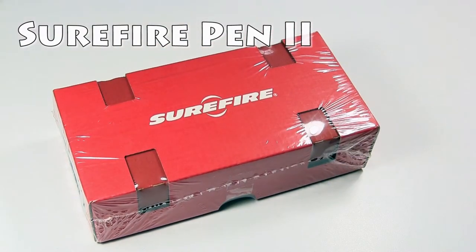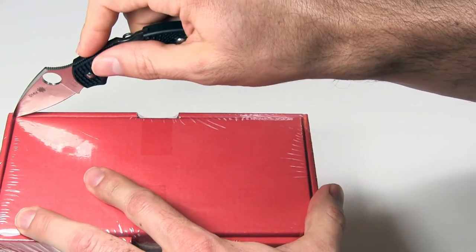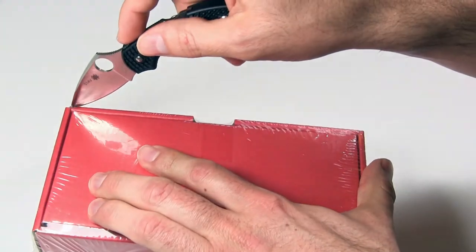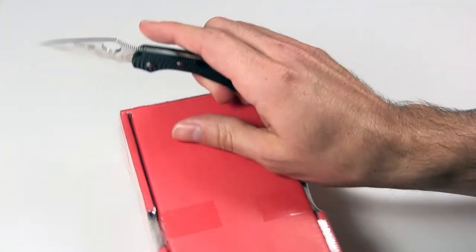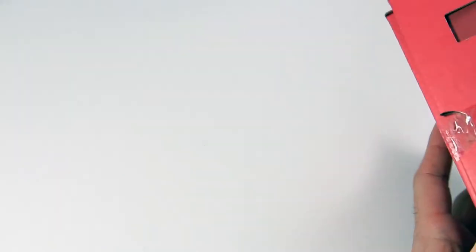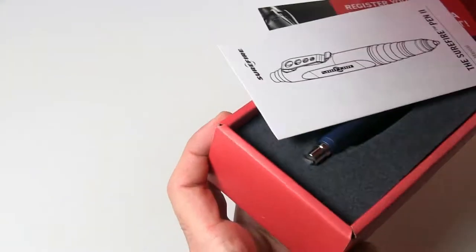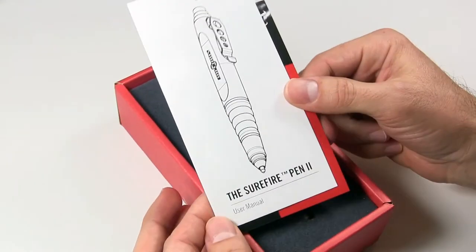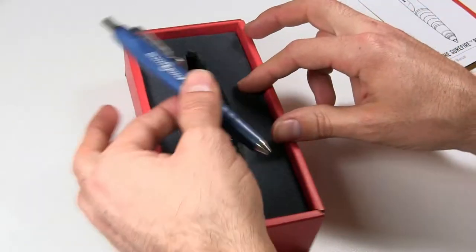All right, well one more time couldn't resist the temptation. Let's have one more look at one other Surefire pen. We'll get to it together. I like that first one, I saw another one I was tempted and I broke down. This one, the Surefire Pen 2, comes in three colors. I opted for the blue.